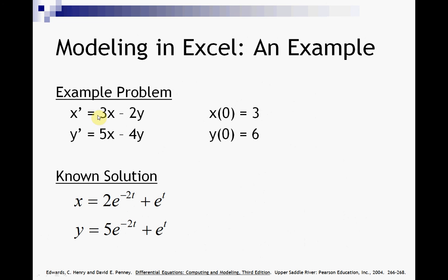There's our problem. X prime, Y prime, X dot, Y dot. There's our initial conditions. And there's our known solutions. And the reason why we put in the known solutions is we want to see how close our approximation is to the real answer. And it's got from that book there.